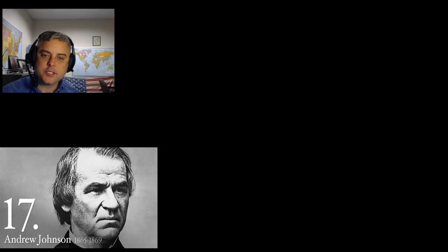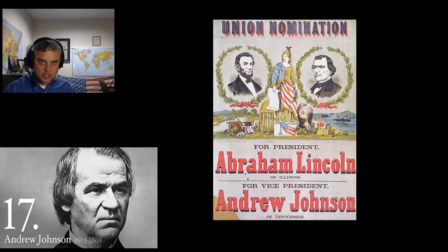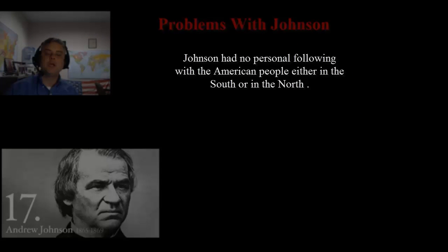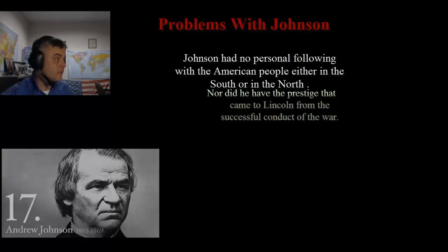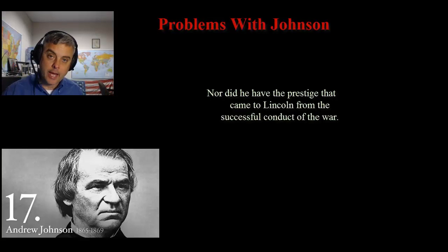Andrew Johnson's rise to the presidency drastically altered the political situation during Reconstruction. Although, like Lincoln, he viewed the restoration of the Southern states as a presidential — not a congressional — function. Johnson was a war Democrat. Lincoln was a Republican, and Johnson is a Democrat from a seceded state. He was placed on the same ticket as Lincoln in 1864 for Lincoln's second term to emphasize the unionism of the Republican Party — to say that this is not a war to punish the South. Johnson had no personal following with the American people, either in the South or in the North, nor did he have the prestige of Lincoln, who was the guy who won the war. So he has no political capital.